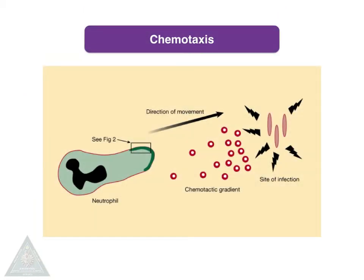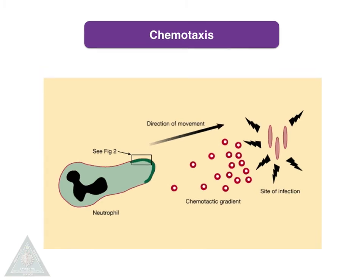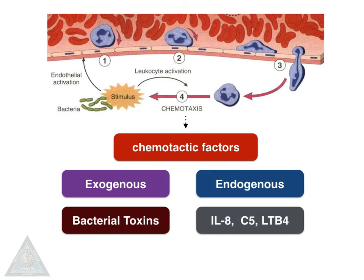Coming to chemotaxis: chemotaxis is the movement of a cell towards a chemical gradient, from the site of emigration to the site of injury. There are many chemotactic factors classified as exogenous and endogenous. Exogenous examples include bacterial toxins; endogenous examples include cytokines such as interleukins, C5a, and LTB4.